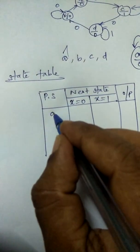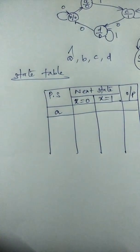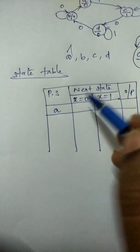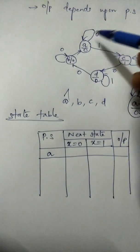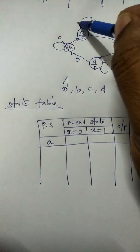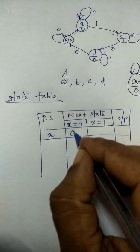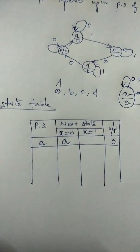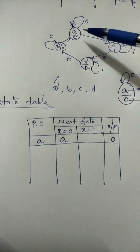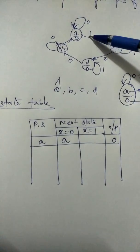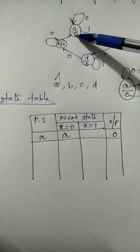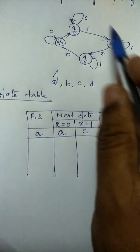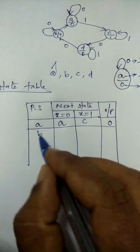For state A, when the input is 0 it goes to the same state A, with output 0. When the input is 1, it goes to state C, and the output is 0.